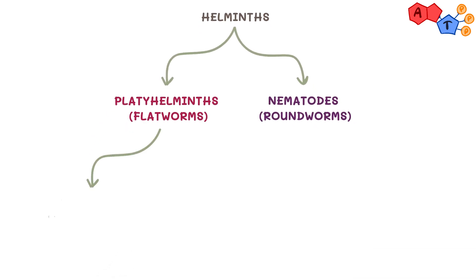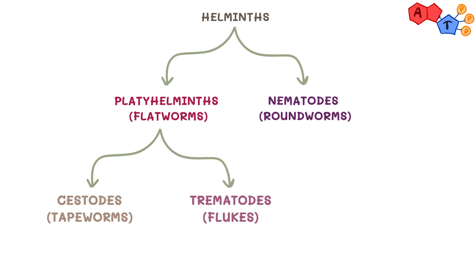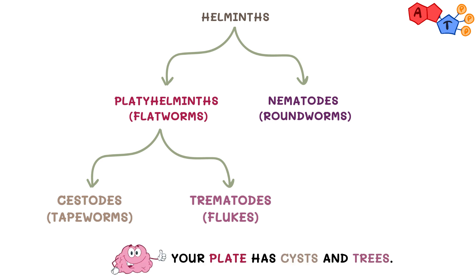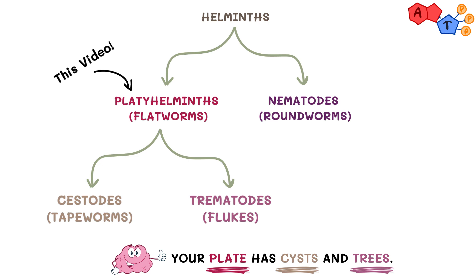Platyhelminths can be further subdivided into cestodes, which are known as tapeworms, and trematodes, which are known as flukes. One way to remember them is: your plate has cysts and trees — plate for platyhelminths, cysts for cestodes, and trees for trematodes. Weird and gross, I know, but it helps. In this video we will focus on the platyhelminths, and we'll leave the nematodes for another video.